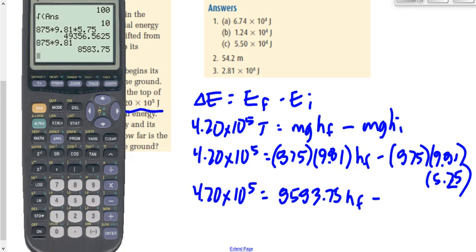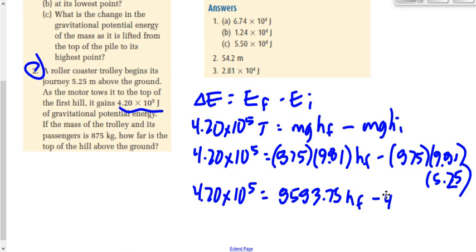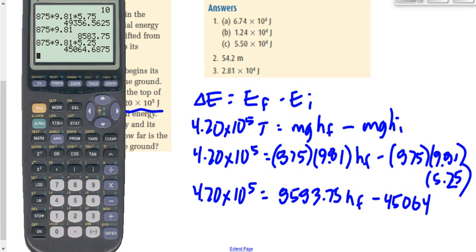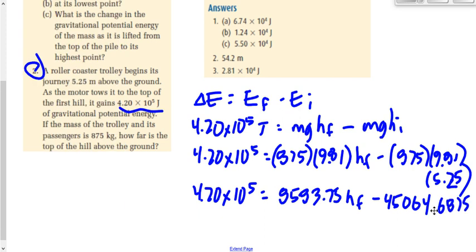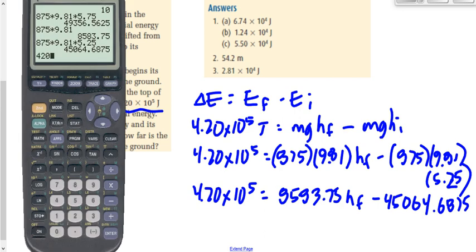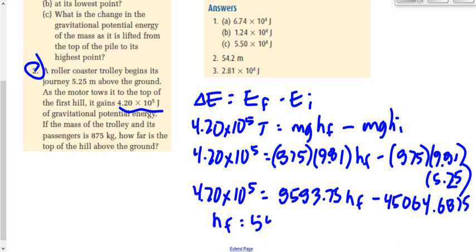Actually, let's get 875 times 9.81 first. 875 times 9.81 gives me 8,585.8375. And now let's subtract. Let's figure out what that number is again now. So, 875 times 9.81 times 5.25, 45064.6875. Okay, now we take that to the other side by adding. So, we've got 420,000 plus 45064 gives me, on the left-hand side, 465,000. Now, let's divide that by 8583.75 gives me an h final of 54 meters, 54.2 meters.